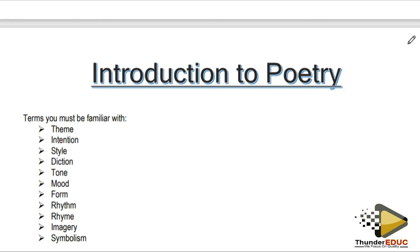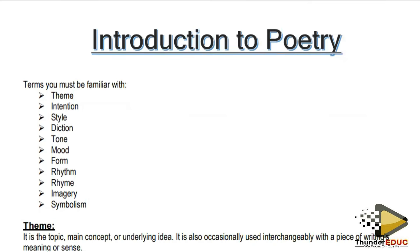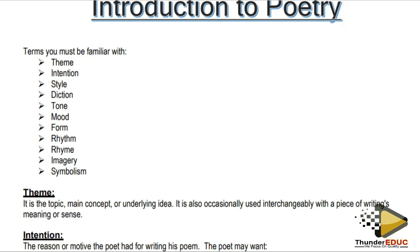I'm starting with the terminologies that we use in poetry. In front of us we have the terms that you must be familiar with: theme and intention, style, diction, tone, mood, form, rhythm, rhyme scheme, imagery, and symbolism. This is the language we use when coming to poetry. We need to know what to do when the question asks us to identify the theme, and we'll go through these things in detail so we can identify them when we have a poem in front of us.